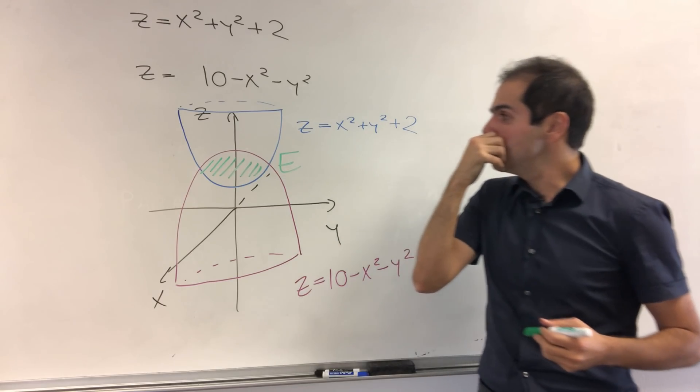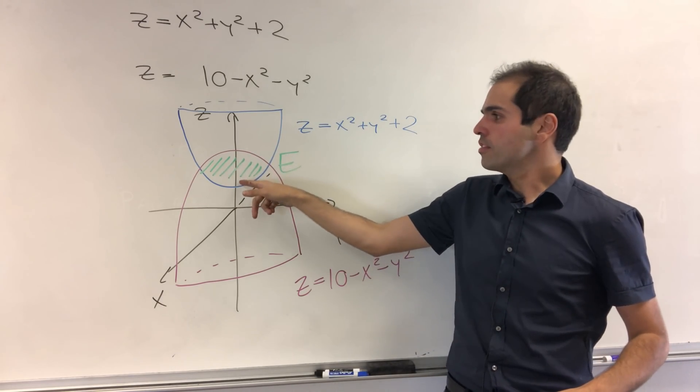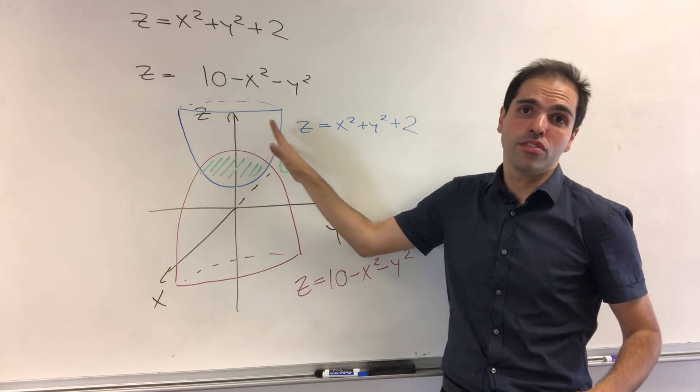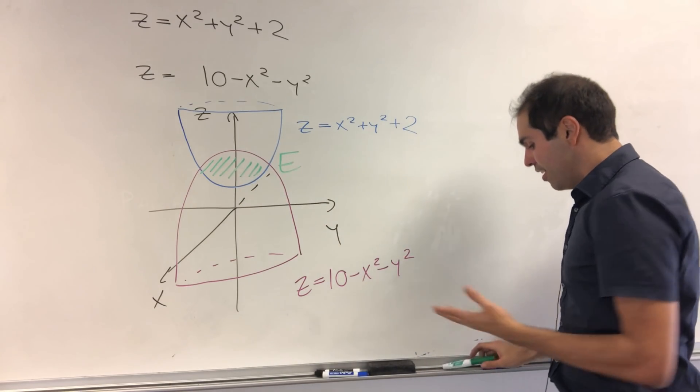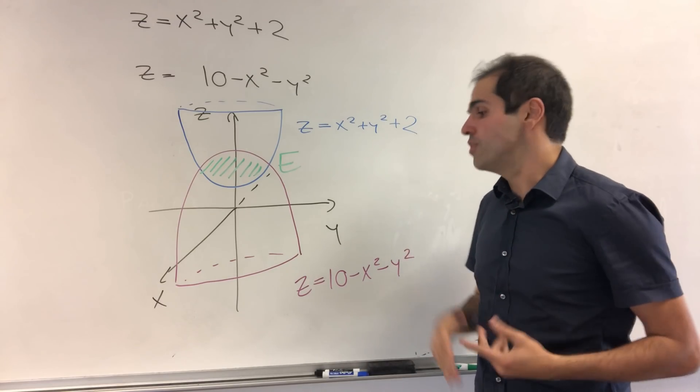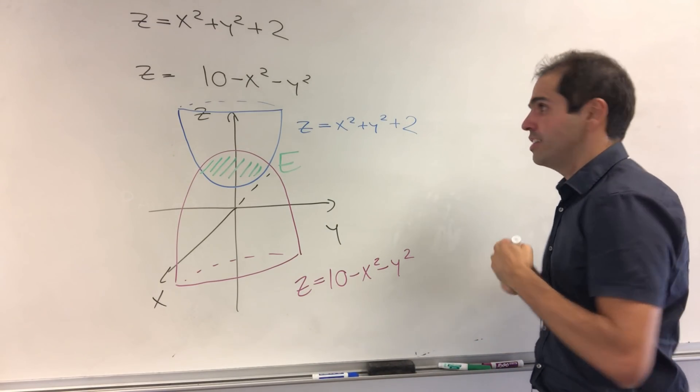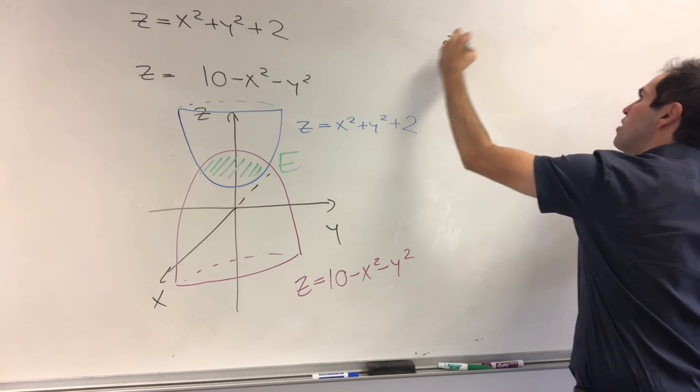And then what do we have? We have the region between those two. So this is our function E. And again, what we want to do, we want to find the mass of that object E, where the density is just a function 2z. Okay. So we're done with the picture part, which gives us an idea of what things look like. And now we want to find the inequalities, step two, inequalities.